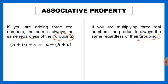So a and b are in one group, c is outside. When we change the groupings, a is now outside and b and c are inside. Regardless of their groupings, we still get the same answer — the result does not change.